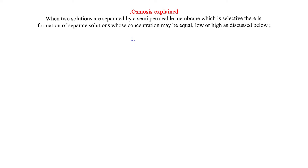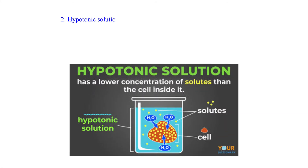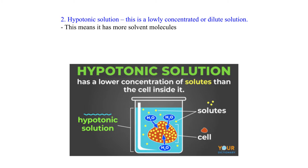1. Isotonic solutions: These are solutions with equal or same concentrations. 2. Hypotonic solution: This is a lowly concentrated or dilute solution. This means it has more solvent molecules and less solute molecules.